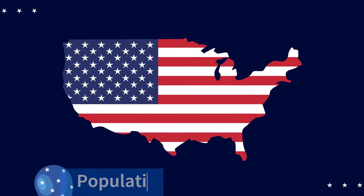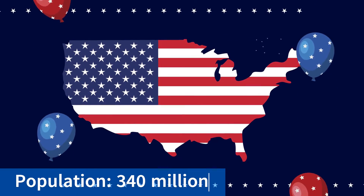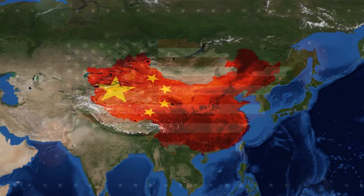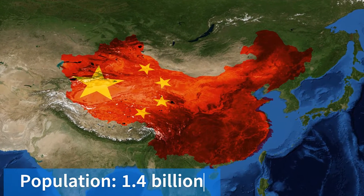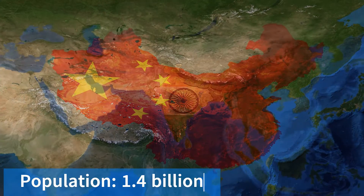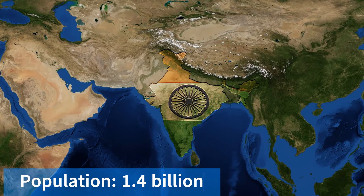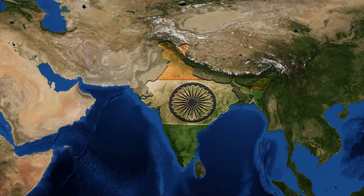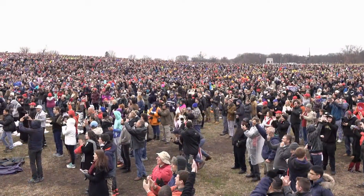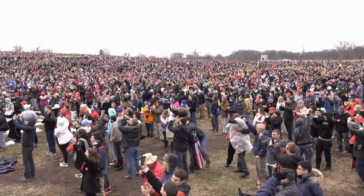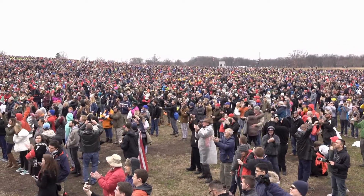The United States has a population of about 340 million people. The countries with the highest populations in the world are China with over 1.4 billion people and India, which is close behind with a similar population size. These two countries alone account for a significant portion of the global population. The earth's population is getting bigger and bigger, with some parts of the world very crowded while other places have fewer people.